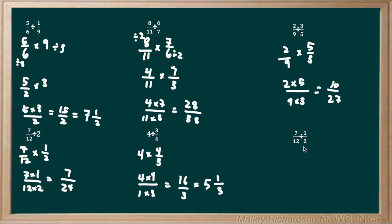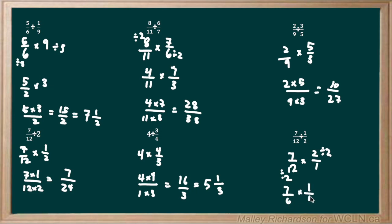Moving on to the final example, we have 7 over 12 divided by 1 over 2. To turn this into multiplication, we take the reciprocal of this fraction. So we have 7 over 12 times 2 over 1. The 12 and the 2 can be reduced by dividing both by 2, leaving us with 7 over 6 times 1 over 1, which gives us an answer of 7 over 6. This can be reduced to a mixed number of 1 and 1 over 6. Either way you leave these answers is fine.